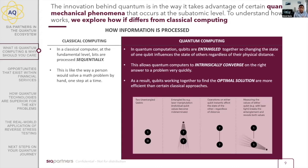In quantum computing, information is entangled together, so one qubit influences the state of others regardless of their physical distance, and quantum computers allow them to intrinsically converge on the right answer. That's different from classical computing's sequential processing. In quantum computing, rather than reading one page at a time, the whole book's information is converged all at once — a very new and interesting concept.